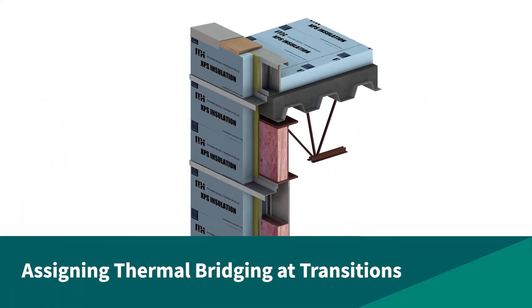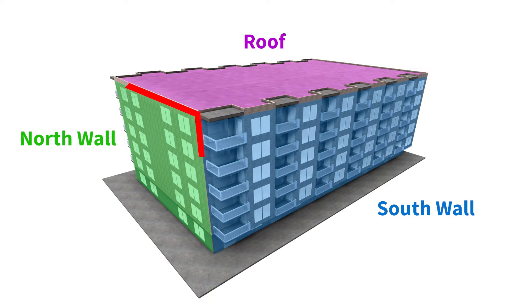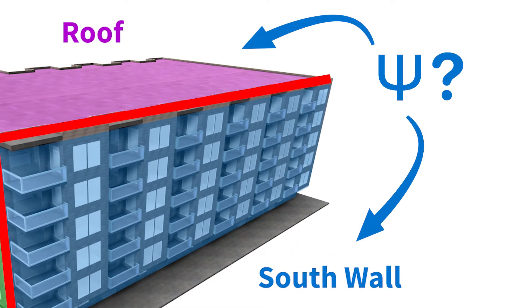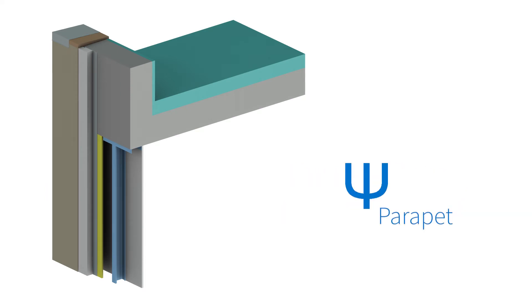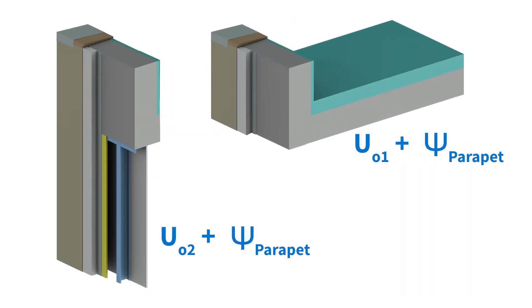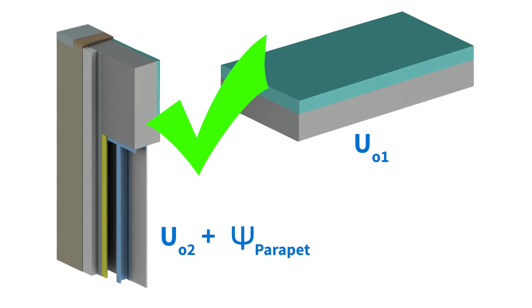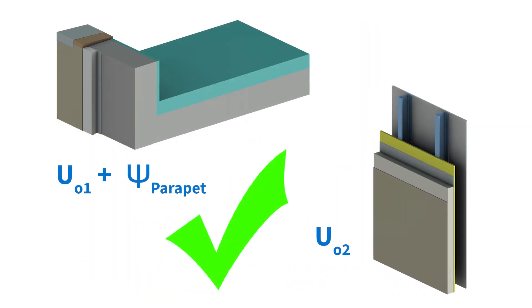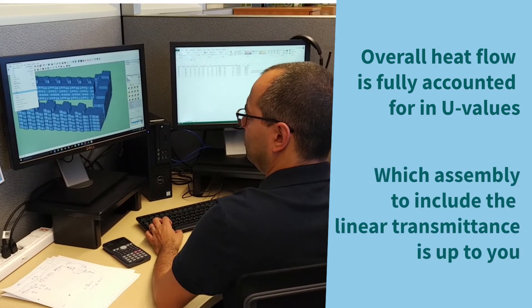Assigning Thermal Bridging at Transitions. The envelope can be split into any number of U-value areas, such as by wall type or elevation. When there is a linear transmittance transition detail between these areas of the building, the question is: which U-value calculation do I assign the linear transmittance to? Let's look at a simple case of a roof parapet that is a transition between a roof and a wall. Here, we'll likely have two U-value calculations for input into the energy model — one for the roof and one for the wall. We shouldn't include the full linear transmittance of the parapet in both calculations, so as to avoid double accounting of the parapet heat flow. Instead, we can assign the linear transmittance to one assembly or the other. The heat flow impacts of the parapet are still fully included in the overall energy model, and choosing which assembly it is assigned to is up to you.